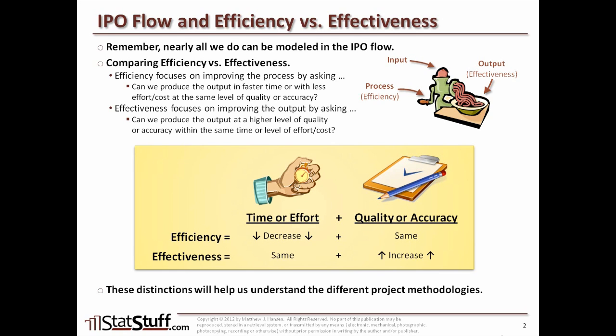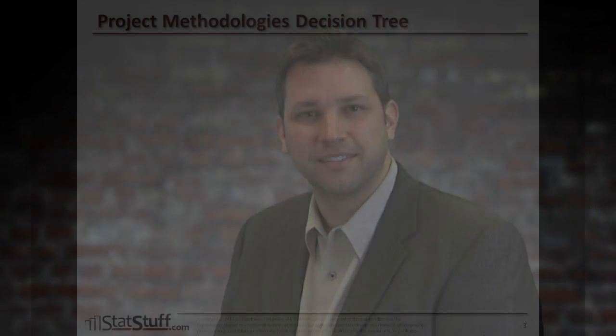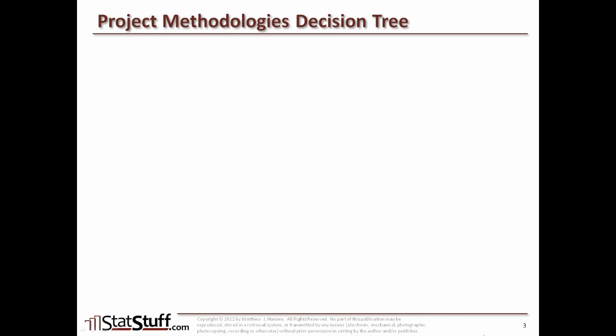The distinctions between effectiveness and efficiency are what's going to really help us as we explore the project methodologies. Of the five different project methodologies, how can we determine which method to use in which circumstance? I've put together a decision tree that will help us determine which method may be the most ideal. Let's walk through that decision tree to find which project methodology may fit for a particular situation.